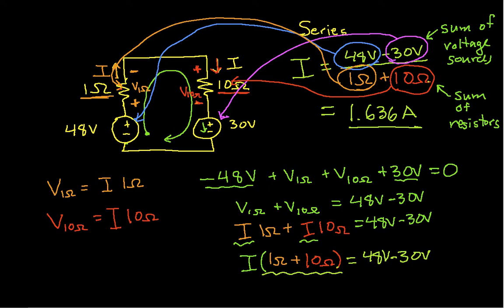Okay, so having computed I, I can now go back and compute the voltage across the 1 ohm resistor. So V1 ohm is going to be I times 1, so this is going to be 1.636 volts. V10 ohms is going to be I times 10, so this is going to be 16.36 volts. Okay, so that's pretty much everything we can compute in this circuit.